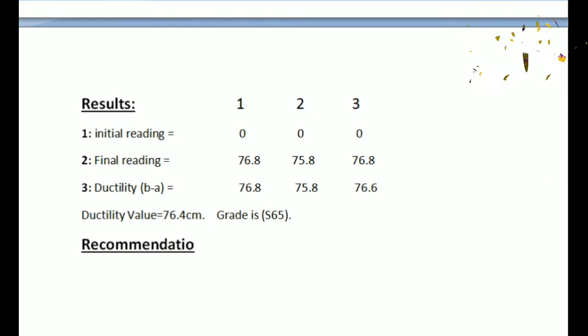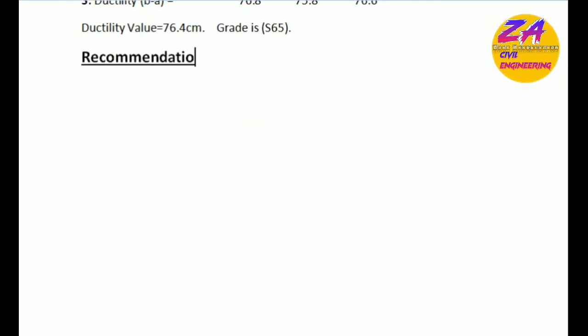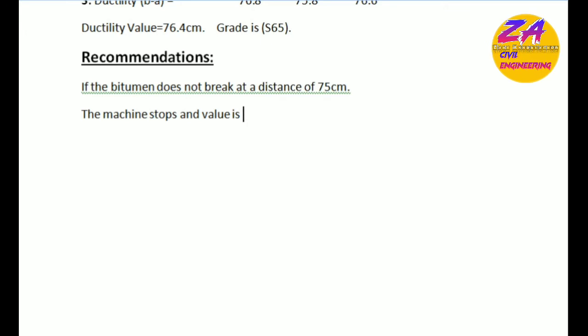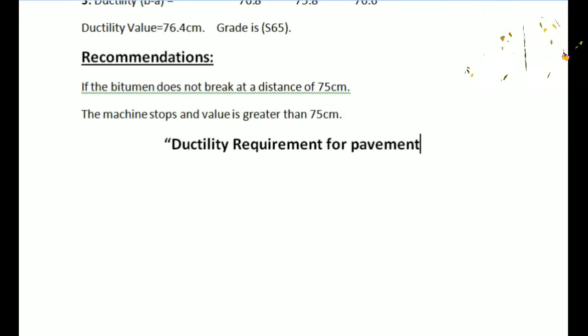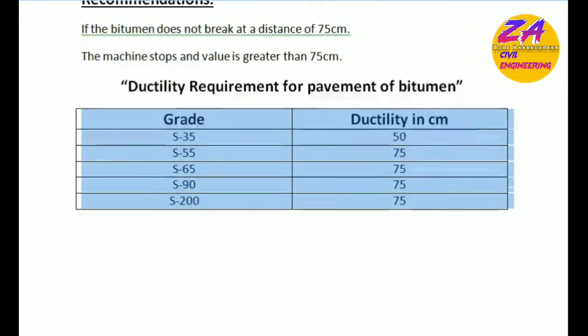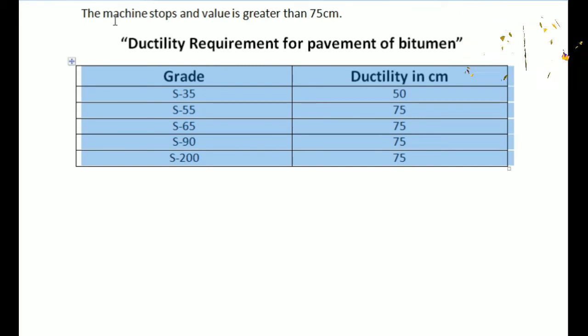After this, recommendations: if the bitumen does not break at a distance of 75 centimeters, the machine stops and the value is greater than 75 centimeters. Ductility requirements for pavement bitumen: for grade S-35 the value is 50, S-55 is 75, S-90 is 75. These grades are used in pavement of road construction.